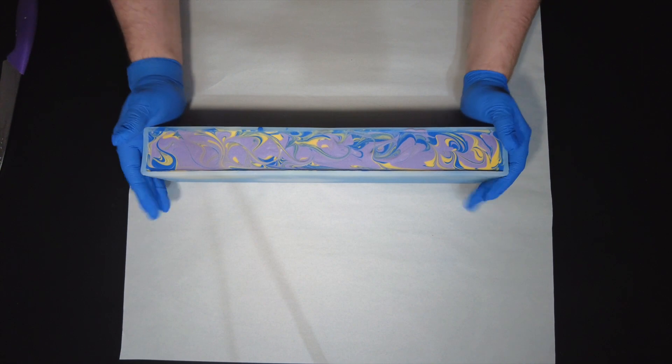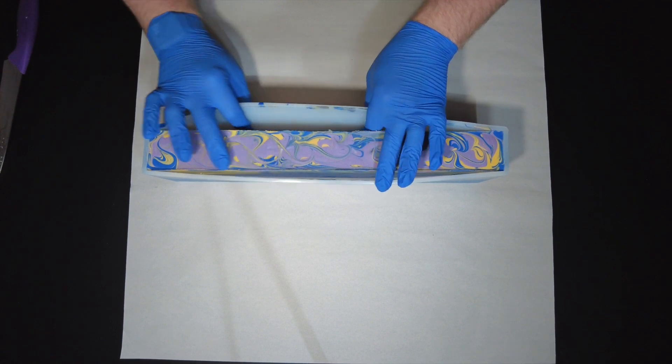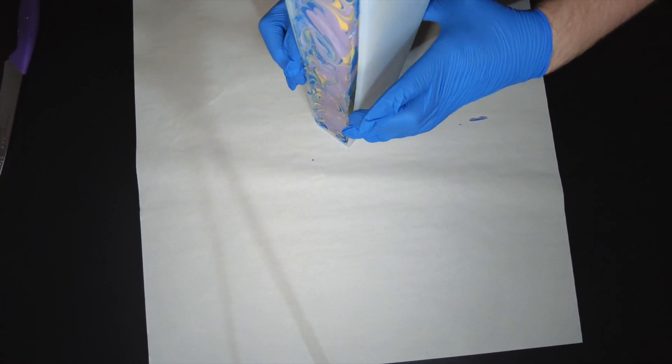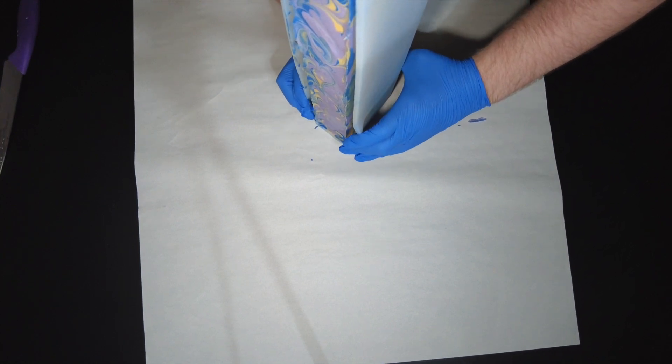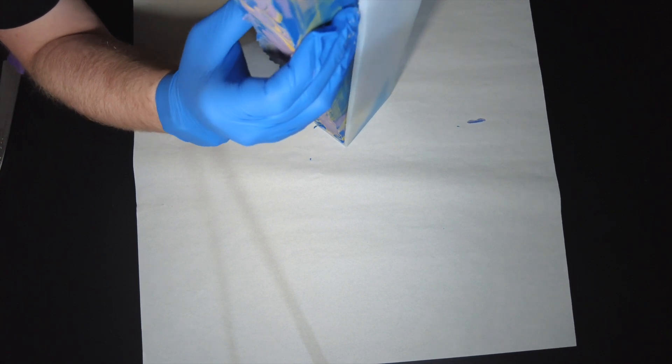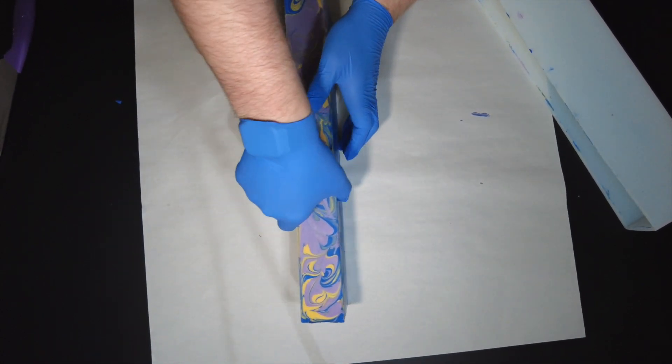All righty. So we are back about 48 hours later and it's time to unmold Cosmic Splash. My apologies, I said Cosmic Swirl earlier. So we're going to pop it out of the mold and it looks like it's going to come out beautifully. Let's see if that's the case. Yep. All righty. Set it down.